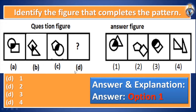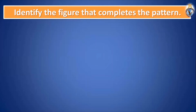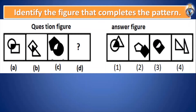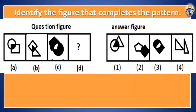You have only answered one incorrectly. Let's move to the next question. Identify the figure that completes the pattern. It seems like the same question. No, it is different — look: A and B are related, then C and D. Which option will be correct — one, two, three, or four?